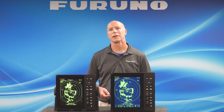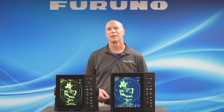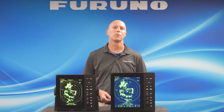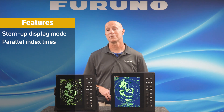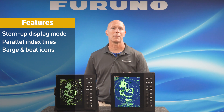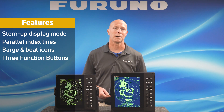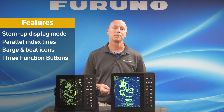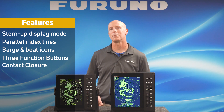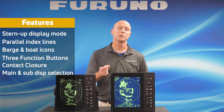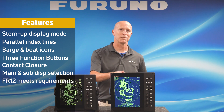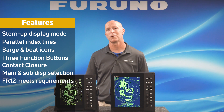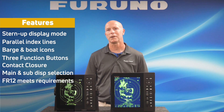These displays work perfectly in a commercial world too. We've included features specifically for workboats like a stern-up display mode for use on ferries, parallel index lines, boat and barge icons as seen here on my FR-12 display, three programmable function buttons with over 80 features to choose from, a contact closure for an external buzzer or operator fitness, sub-display modes for connecting multiple displays on a single network, and the FR-12 display screen is large enough to meet U.S. Coast Guard Category 1 and Category 2 carriage requirements for towing vessels under 300 gross tons.